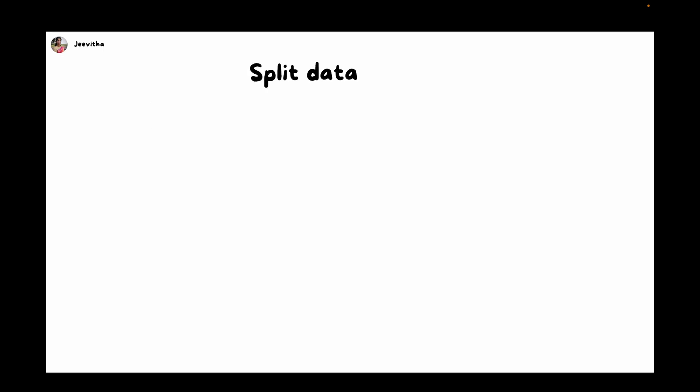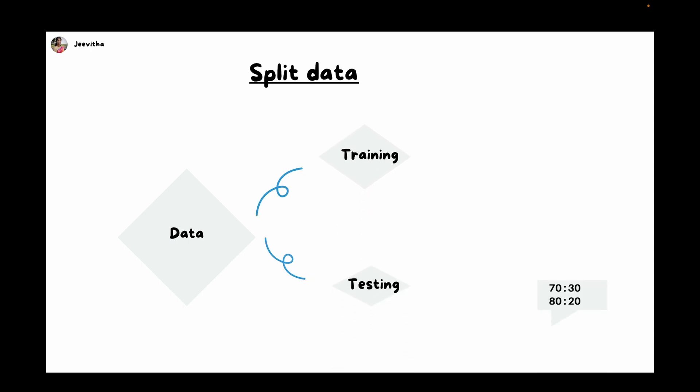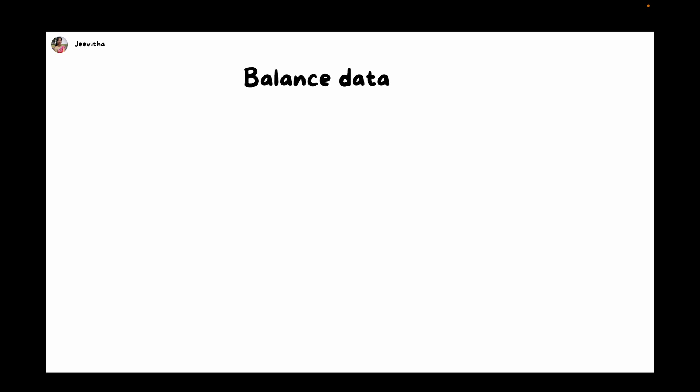The next important thing is to split your data. After cleaning and exploring data, make sure you split your data for training and testing. We always use 70% of the data for training and the remaining 30% for testing. Similarly, you can try an 80-20 rule. Splitting data is very important. Once you split the data, you have to balance it — but remember, this step is applicable only for a classification problem, not for regression and clustering.